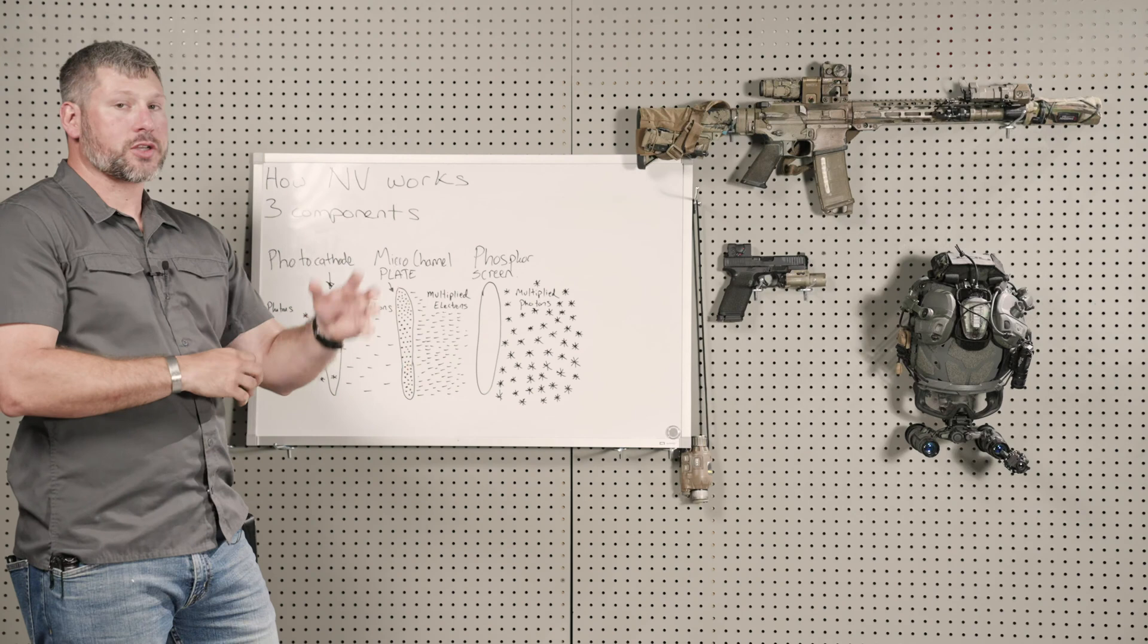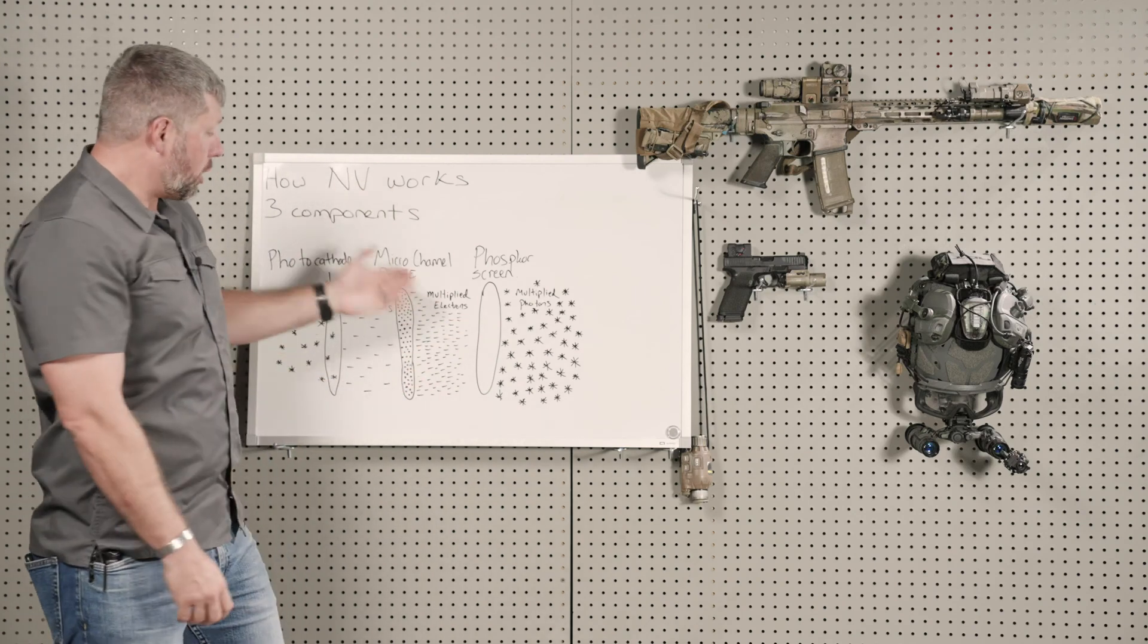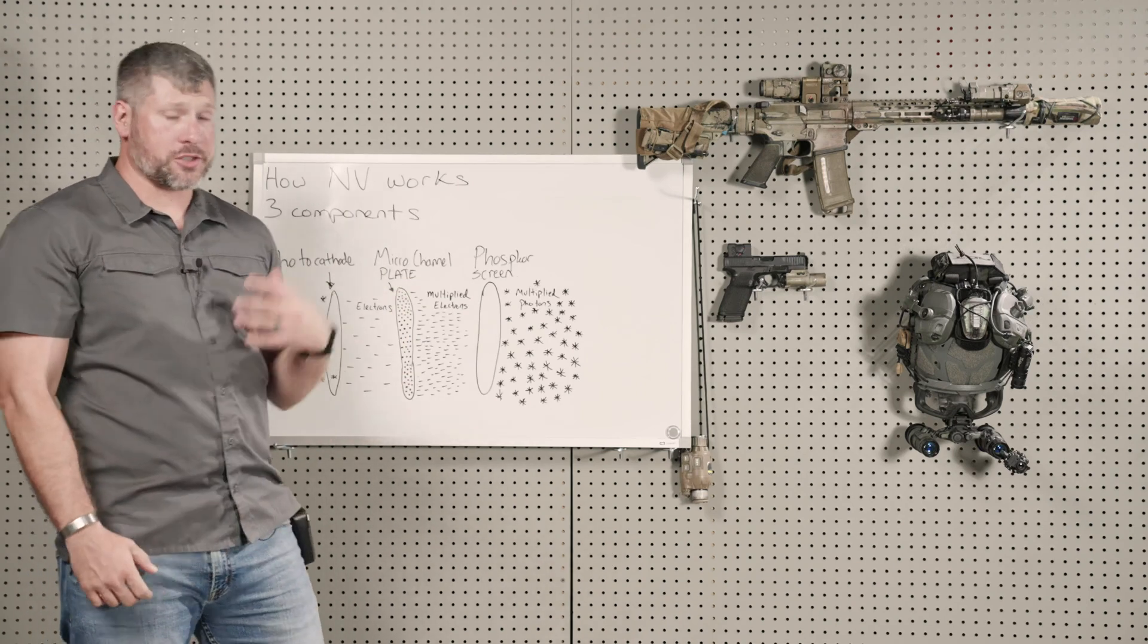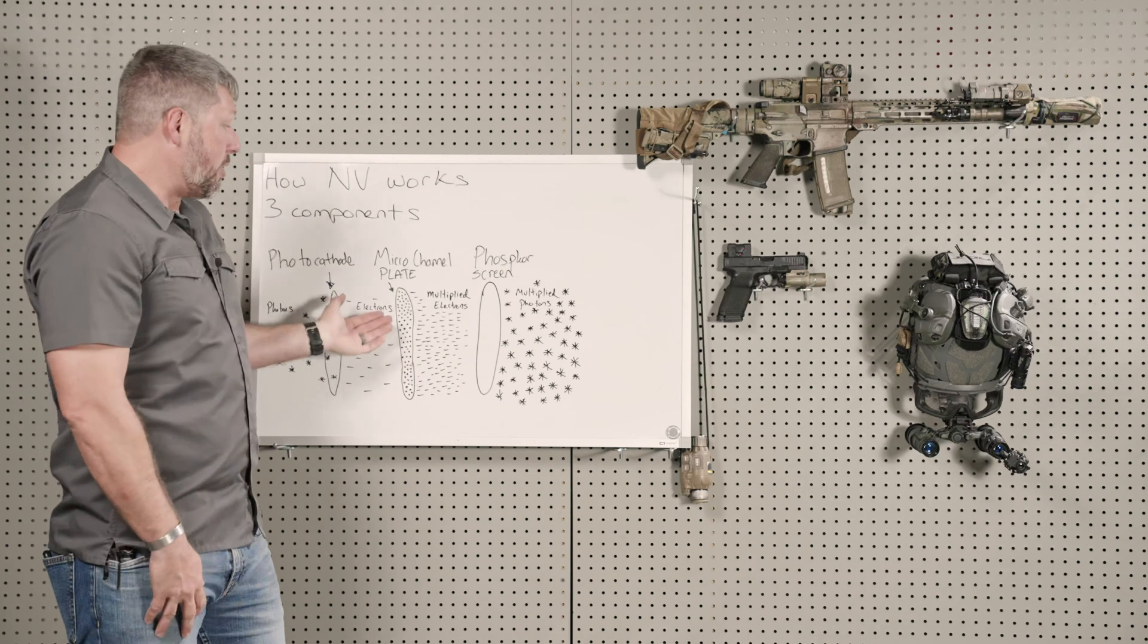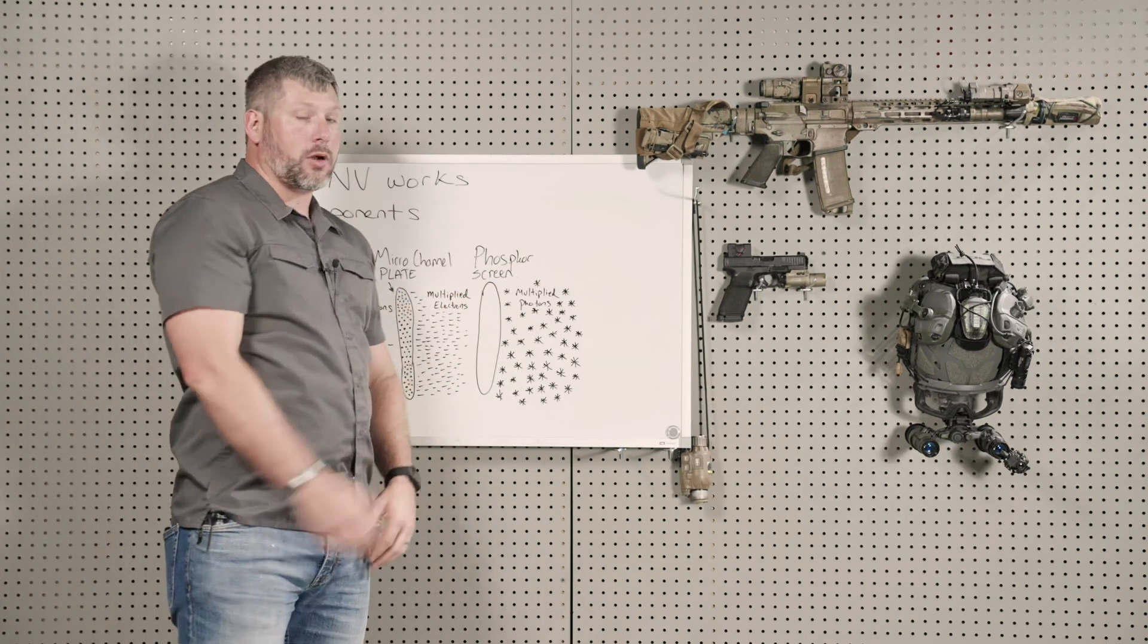And then those multiplied electrons bounce and become even more multiplied electrons. So on the backside, they're kicked out as multiplied electrons, thousands and thousands of times multiplied. And then they flow through time and space again, and they hit what's called the phosphor screen.